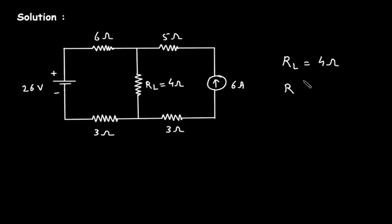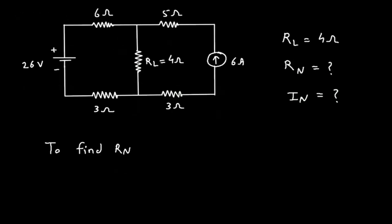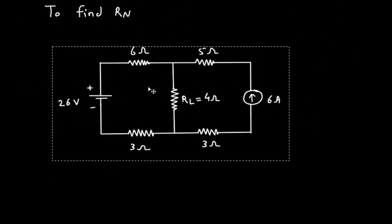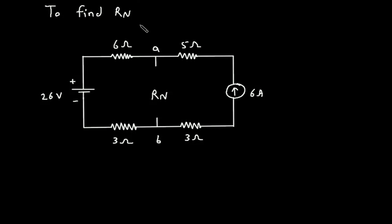For Norton's equivalent circuit we have to find Rn and In. First we will find Rn. To find Rn, we have to remove this RL. Let's say this is terminal A and this is terminal B, so this will be our Rn, and we also have to turn off all the sources.